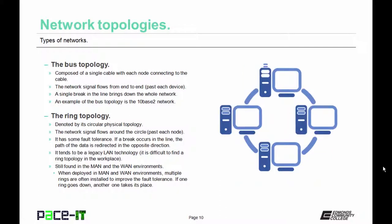Next up is the ring topology. It's denoted by its circular physical topology. The network signal flows around the circle past each node. The ring topology does have some fault tolerance. If a single break occurs in the line, the path of the data is redirected in the opposite direction, so it can still reach all of the nodes. The ring tends to be a legacy local area network technology. It is rather difficult to find a ring topology in the workplace, but the ring topology is still commonly found in metropolitan area network and wide area network environments.